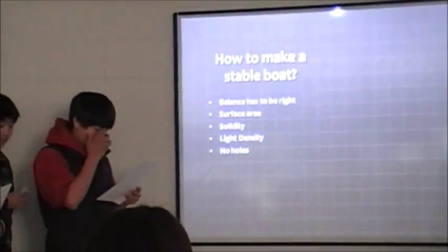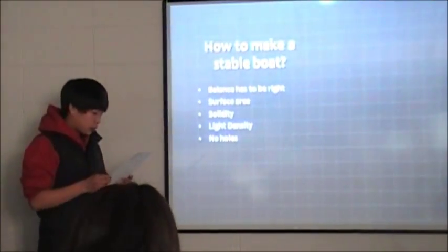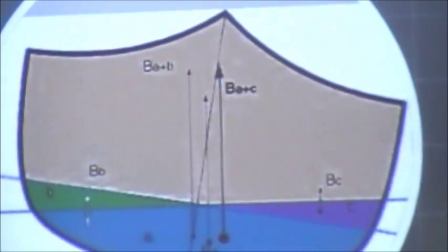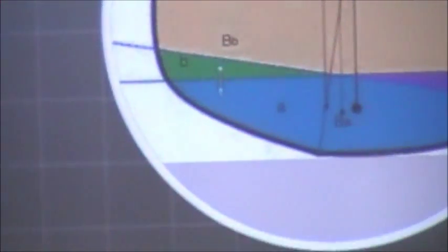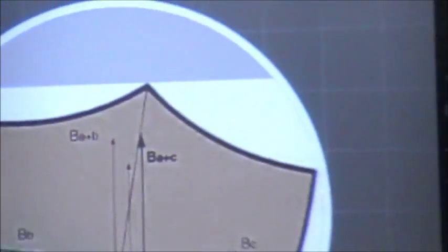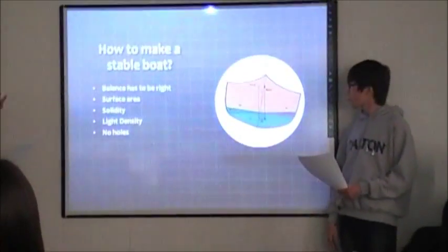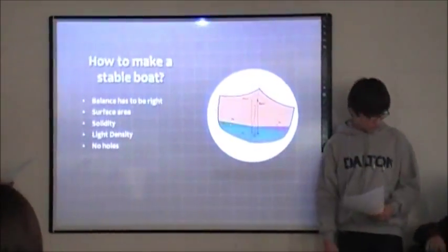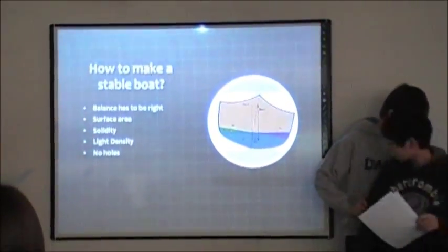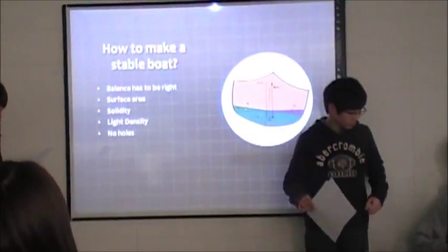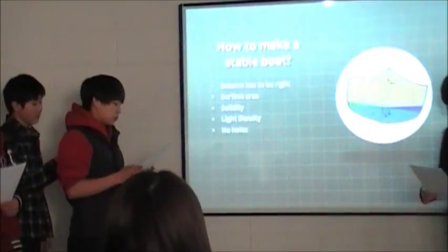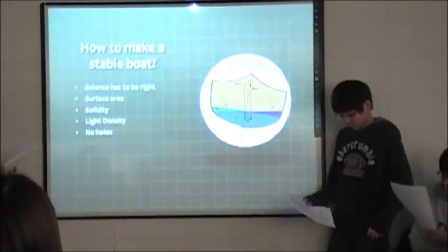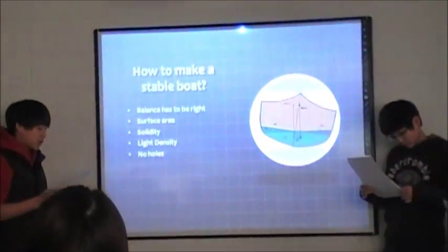Stable balance of the boat will make the boat float on the water safely. The wide surface area will displace more water out of the boat and make it float on the water. The solidity of the boat will hold the boat to keep its shape. Light density will make the boat not sink and holes will not make the water go inside of the boat and make the density heavier than the water and make it sink.